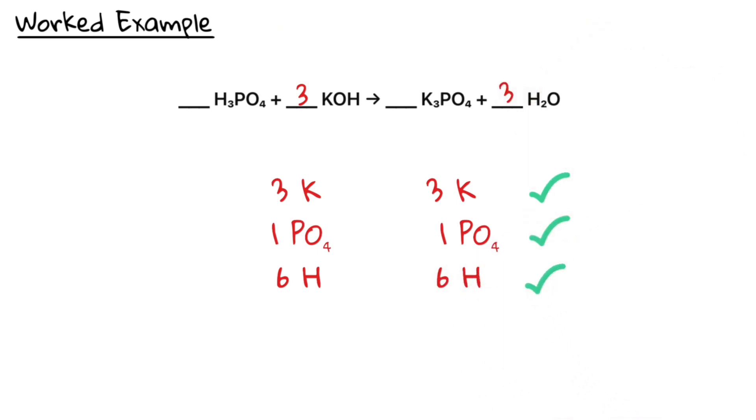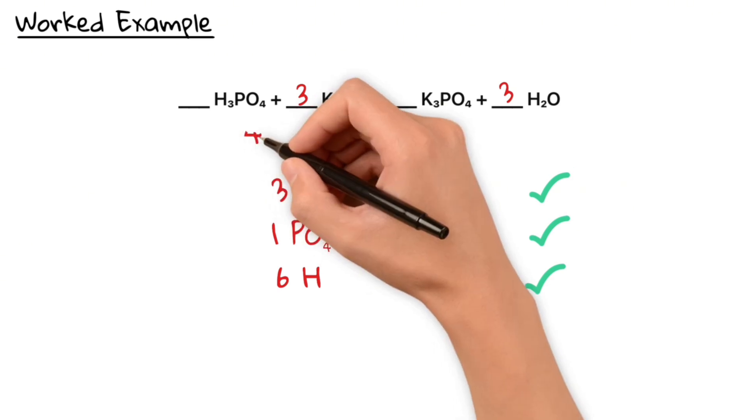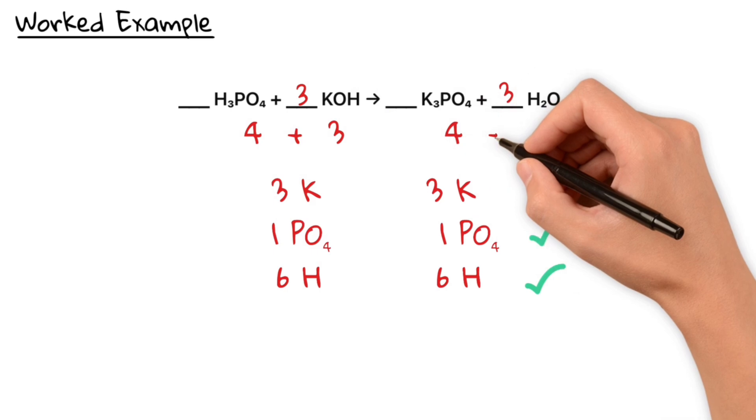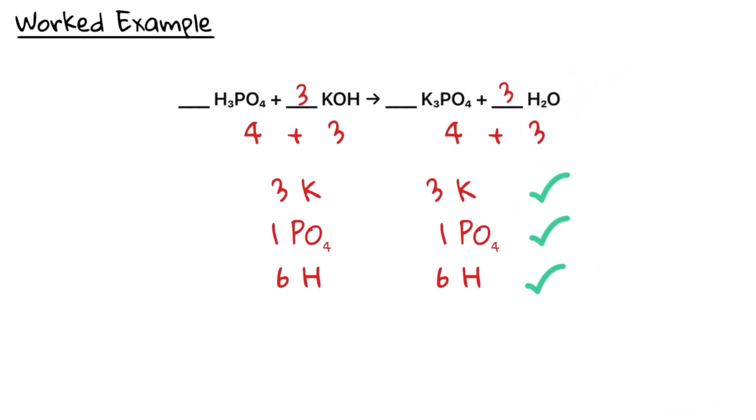To double-check if we did everything correctly, we can now count the oxygens on both sides. We see that on the left-hand side, we have 4 plus 3 equals 7 oxygen, and on the right-hand side, we also have 4 plus 3 equals 7 oxygens. And that's the proof that it's balanced correctly.